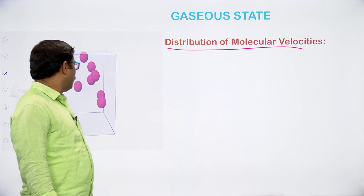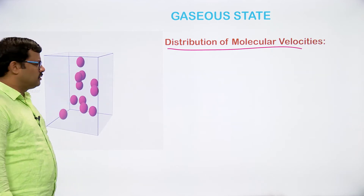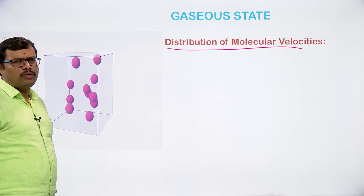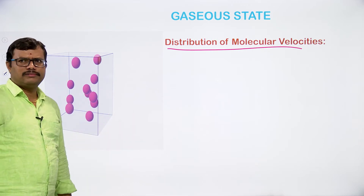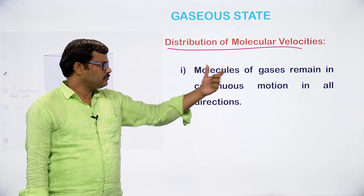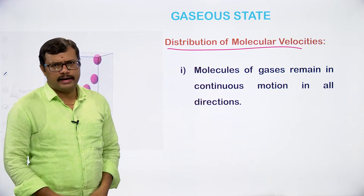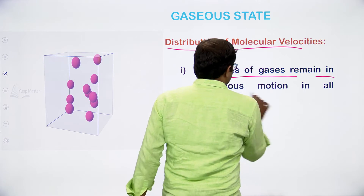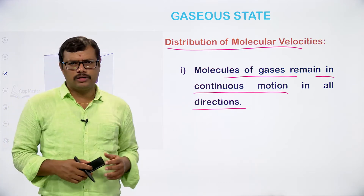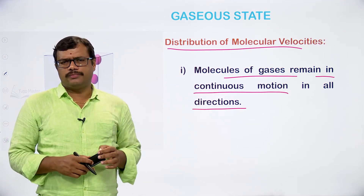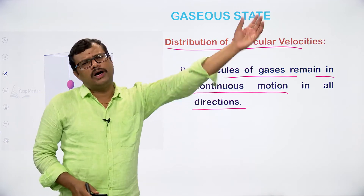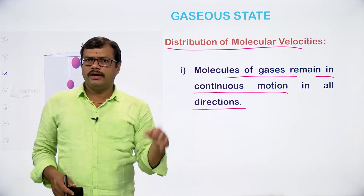We have taken a gas in a box, as we saw while dealing with kinetic molecular theory. I have taken a gas in a container, and the gas molecules are moving randomly, colliding with one another and with the walls of the container. The first point: molecules of gases remain in continuous motion in all directions. The gas molecules are not sitting silently; they are moving in all possible directions, and different gas molecules are moving in different directions.